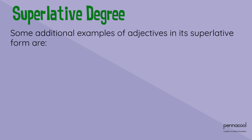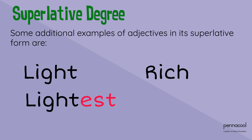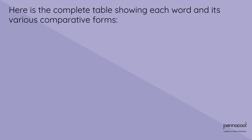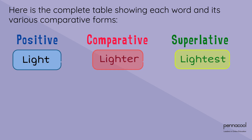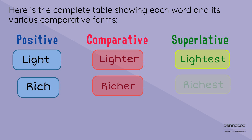Some additional examples of adjectives in their superlative form: the superlative of 'light' is 'lightest', and 'rich' becomes 'richest'. Here is the complete table showing each word and its various comparative forms: light, lighter, lightest; rich, richer, richest.